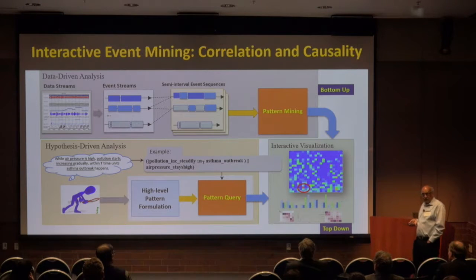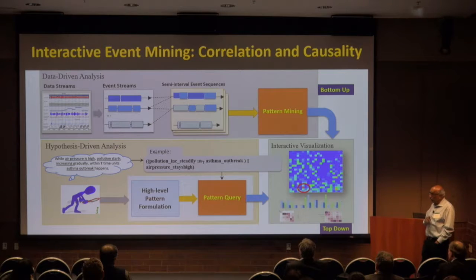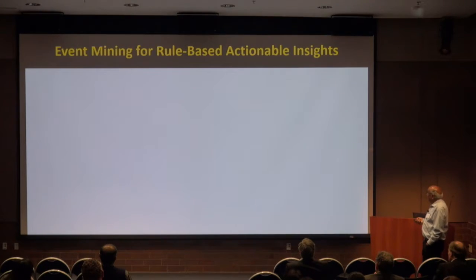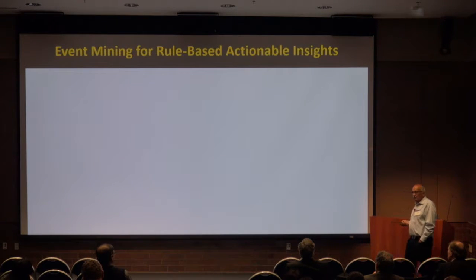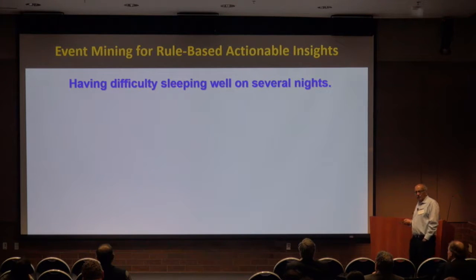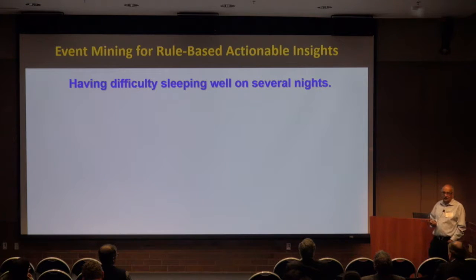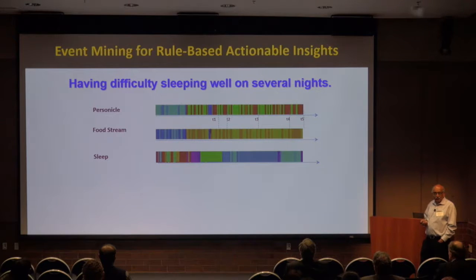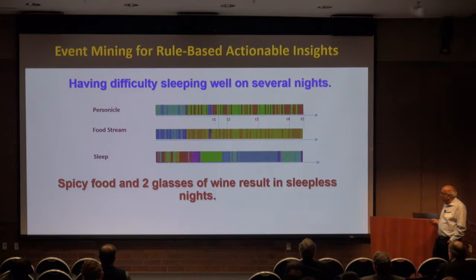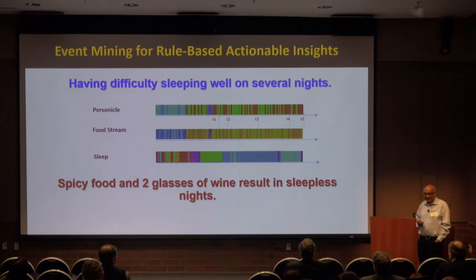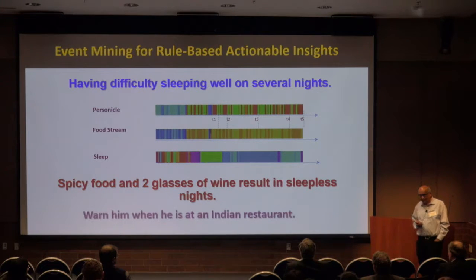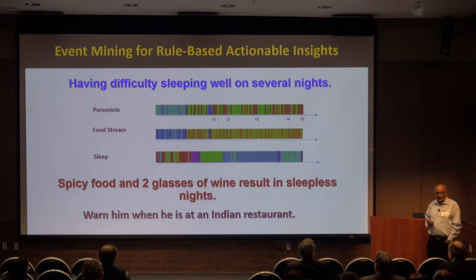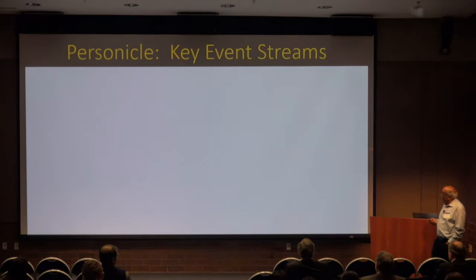The idea is that when you have all these events related to a person over a long time, you can form hypotheses and test them. We're inspired by Judea Pearl's work on causality. We've developed an event mining algebra that allows you to represent and test hypotheses using this language to get useful insights. For example, if you're having difficulty sleeping, your system has your personical data, food stream, and sleep data. Through event mining, you come up with: spicy food and two glasses of wine result in sleepless nights. As soon as you enter an Indian restaurant, it warns you.